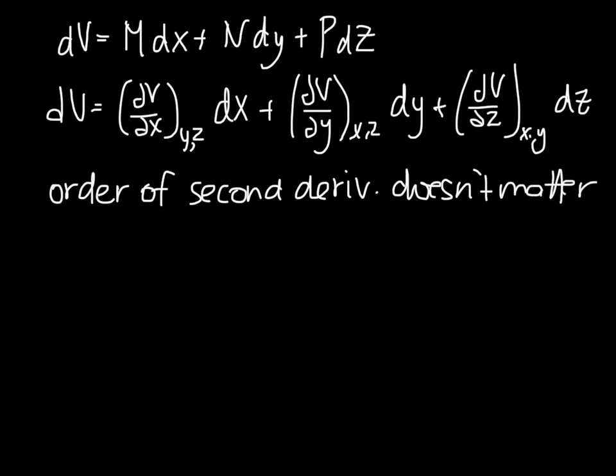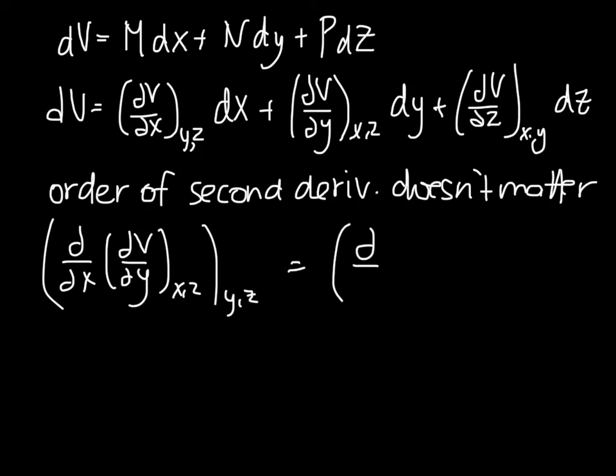So whether we do dV dx dy, or let's put what's held constant here because that's still important. So this has x and z held constant and then y and z. Or if we do d dy d dx, and this has y and z constant and then x and z constant, it doesn't matter. So here I want x, then y, and here I want y, then x, and this is still true.